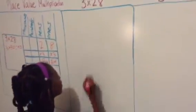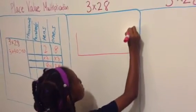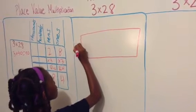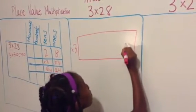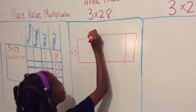Next, we have the area model. We're going to be multiplying everything by 3.